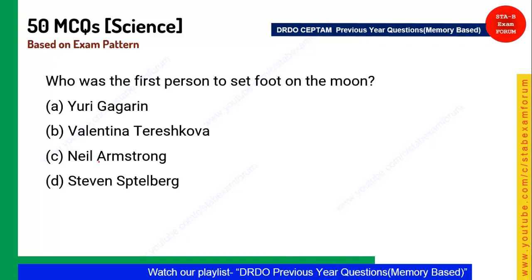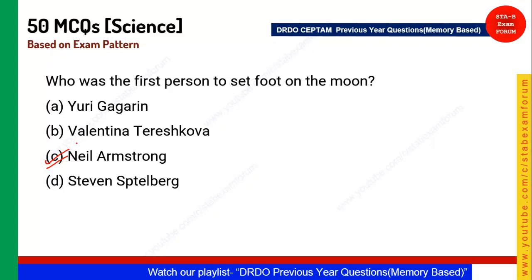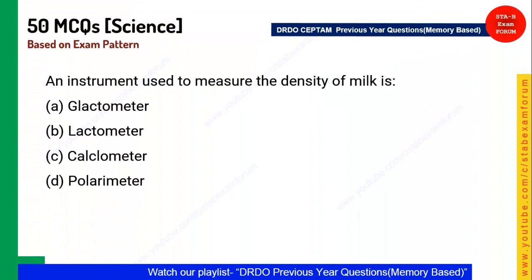Next question: Who was the first person to set foot on the moon? Neil Armstrong was the first person on the moon, and Edwin Aldrin was the second. Valentina Tereshkova was the first woman in space, and Yuri Gagarin was the first person to enter space. Option C is the correct answer.